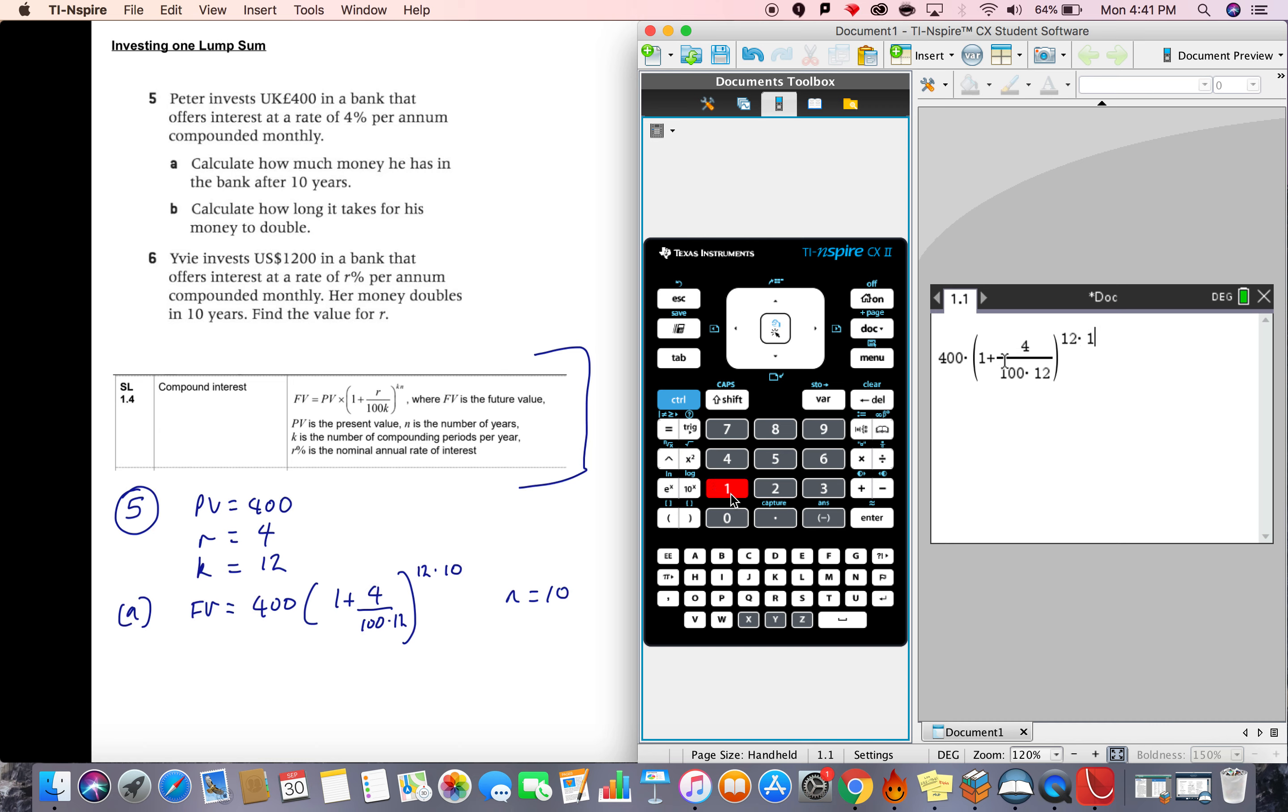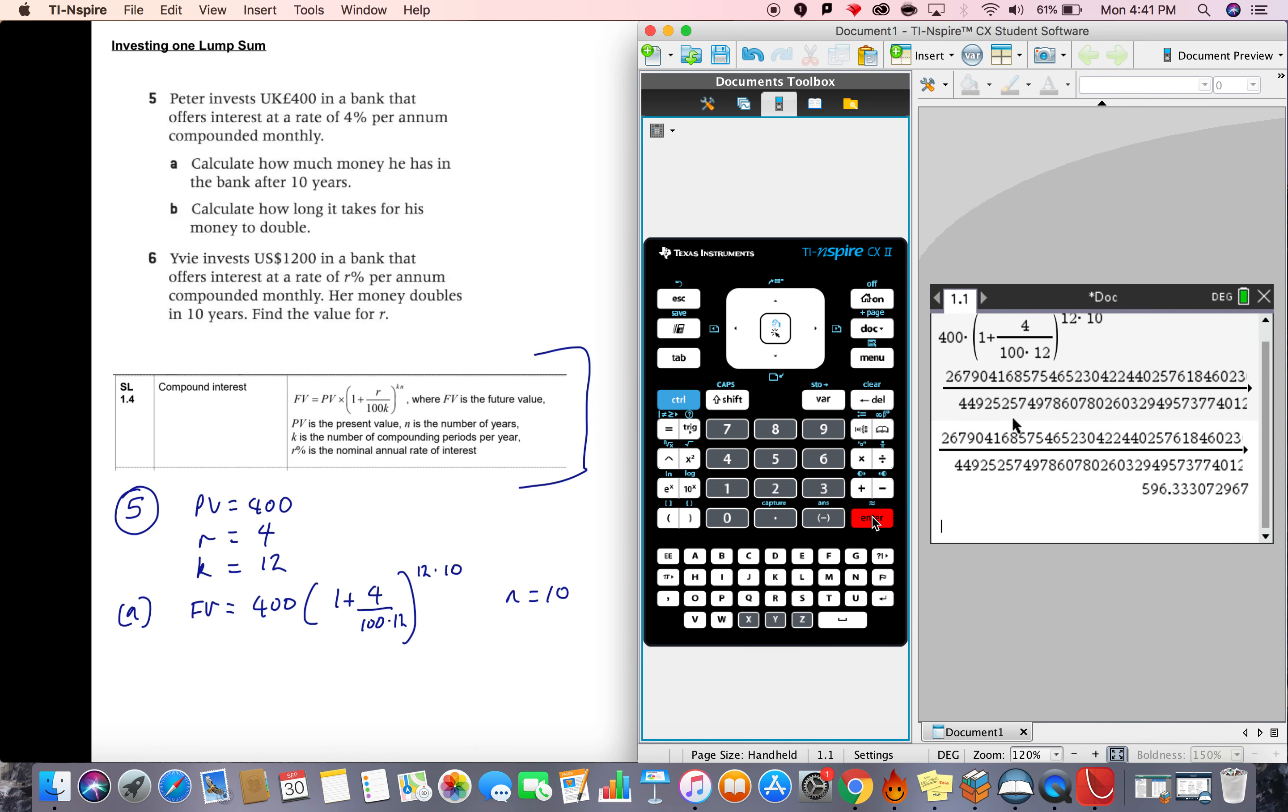You can obviously calculate these little bits individually. And look at that, it gives you an exact answer. Now remember, we press enter and it gives an exact answer. We can actually just go up again, bring this down, and press control enter, and it gives you the decimal answer. So we can go back here and say the final value is equal to 596.33 GB pounds.